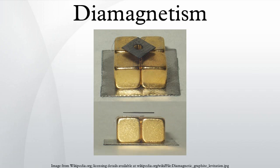Diamagnetic materials create an induced magnetic field in a direction opposite to an externally applied magnetic field, and are repelled by the applied magnetic field. In contrast, the opposite behavior is exhibited by paramagnetic materials. Diamagnetism is a quantum mechanical effect that occurs in all materials. Where it is the only contribution to the magnetism, the material is called a diamagnet. Unlike a ferromagnet, a diamagnet is not a permanent magnet.